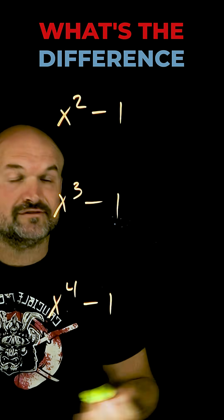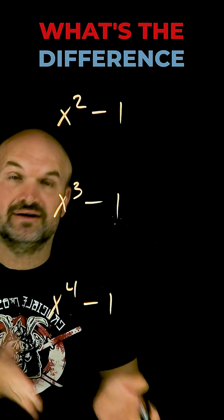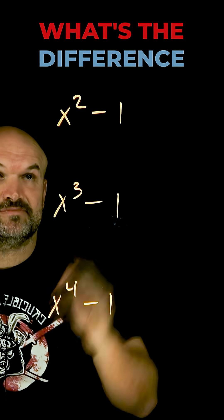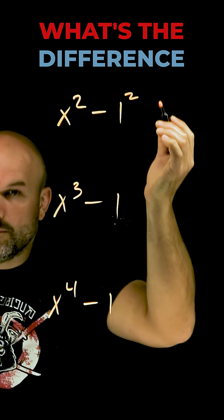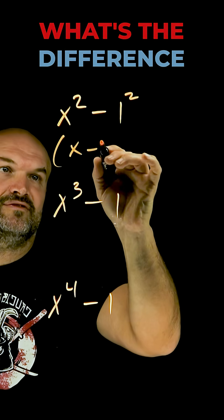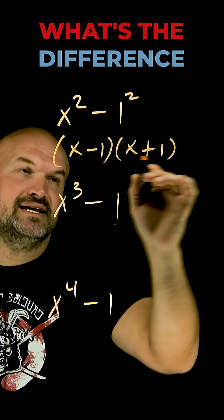For this one, I want you to recognize the difference of two squares. a squared minus b squared is a minus b times a plus b. We can easily factor this, understanding that one is also a square number, so we can quickly factor this to x minus 1 times x plus 1.